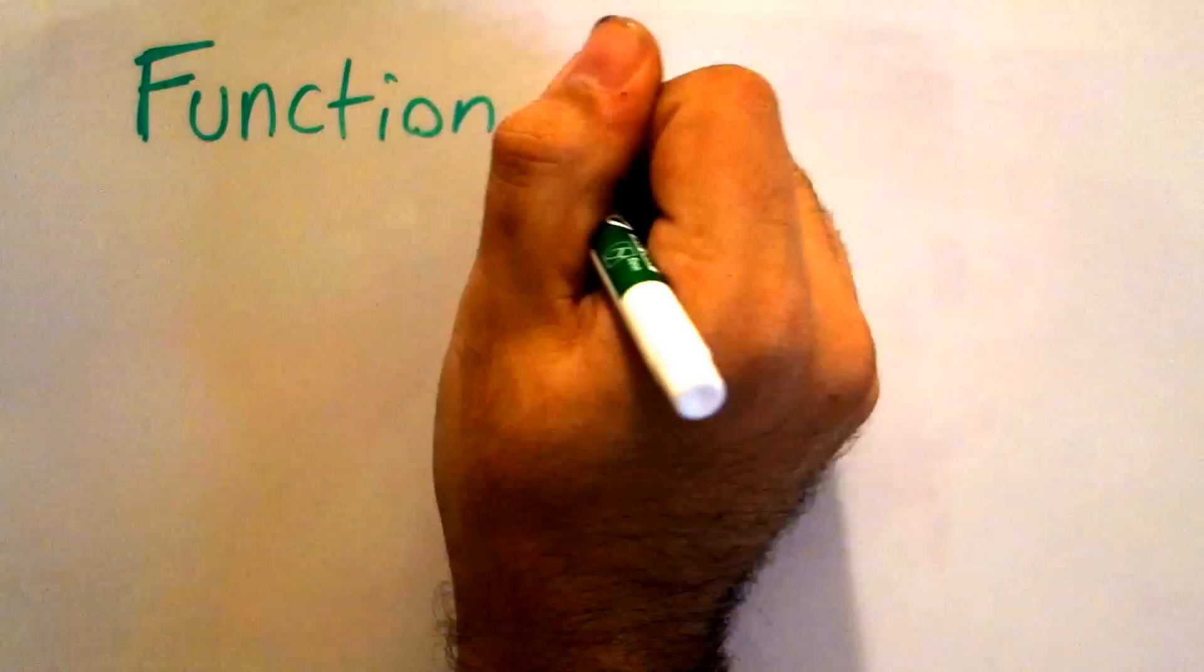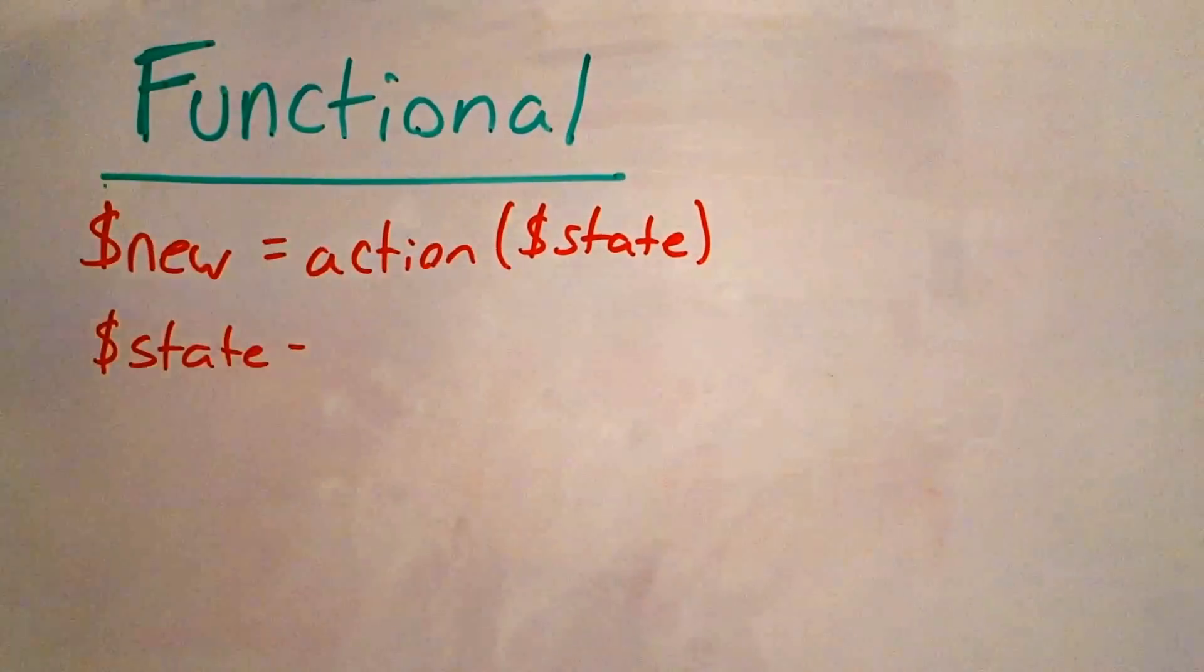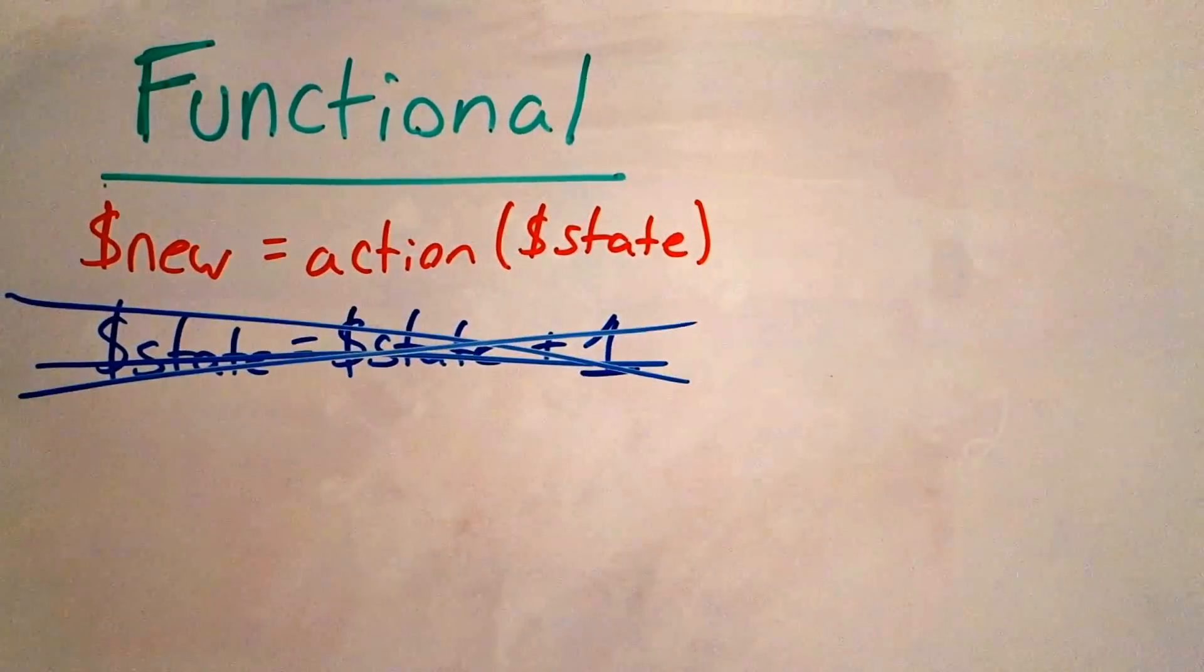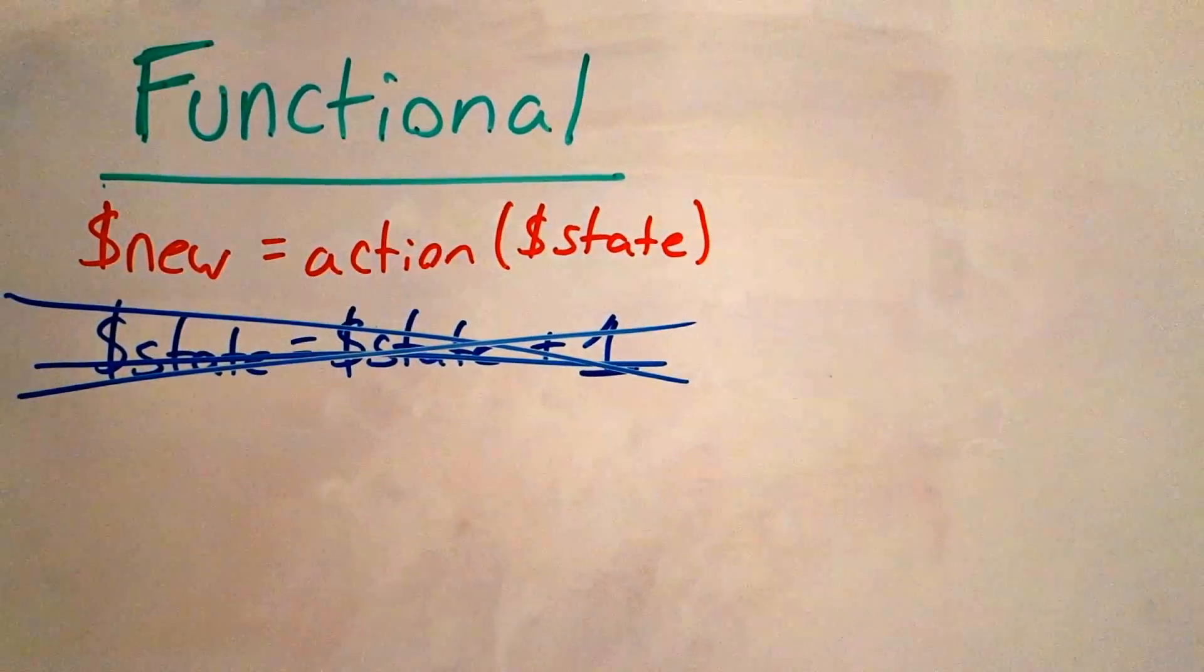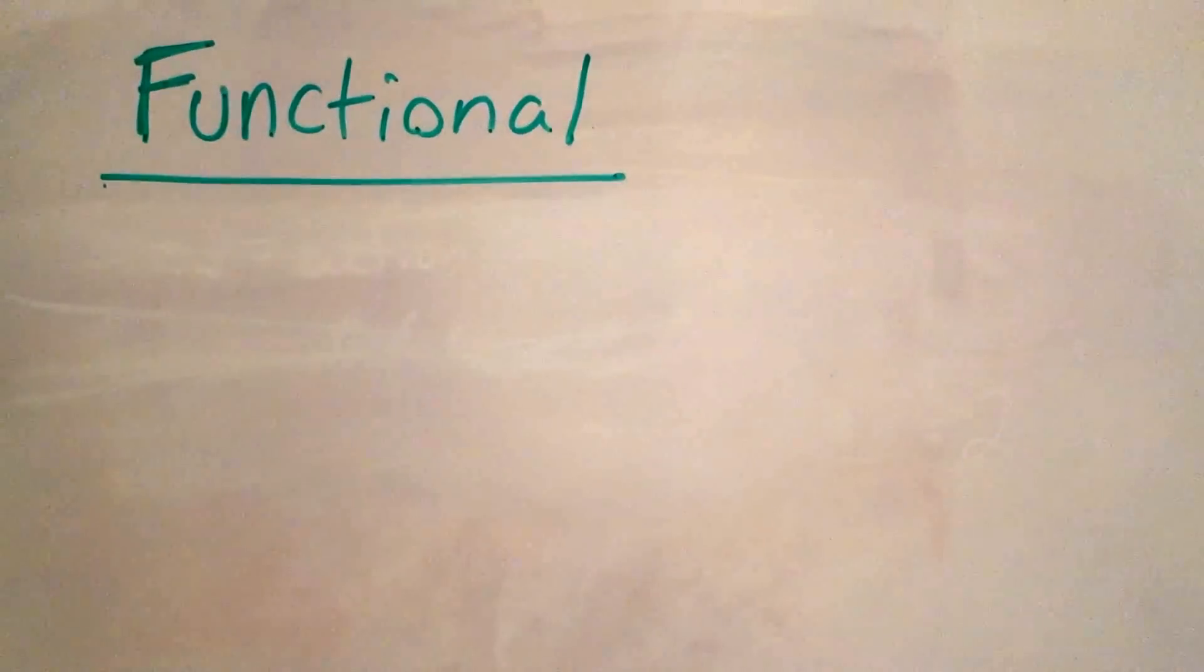With functional code, each statement can only transform state. Therefore, state is immutable, meaning that functions cannot change state, they can only return new transformations of the original state.